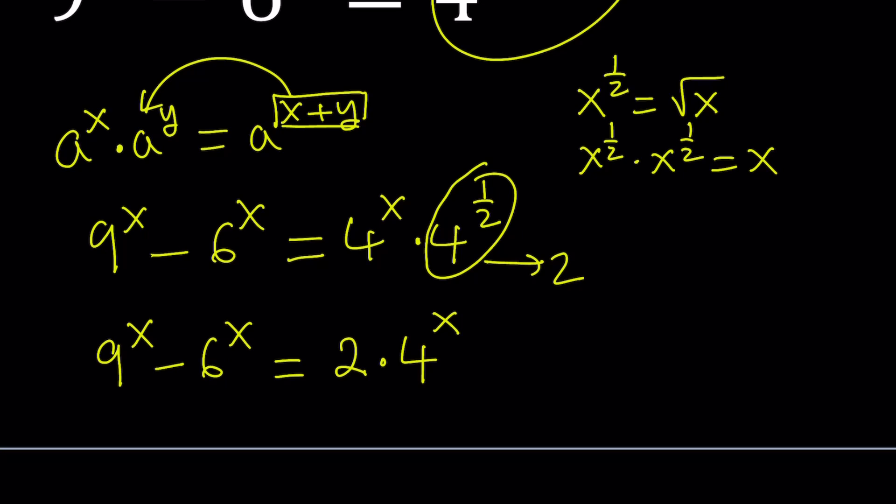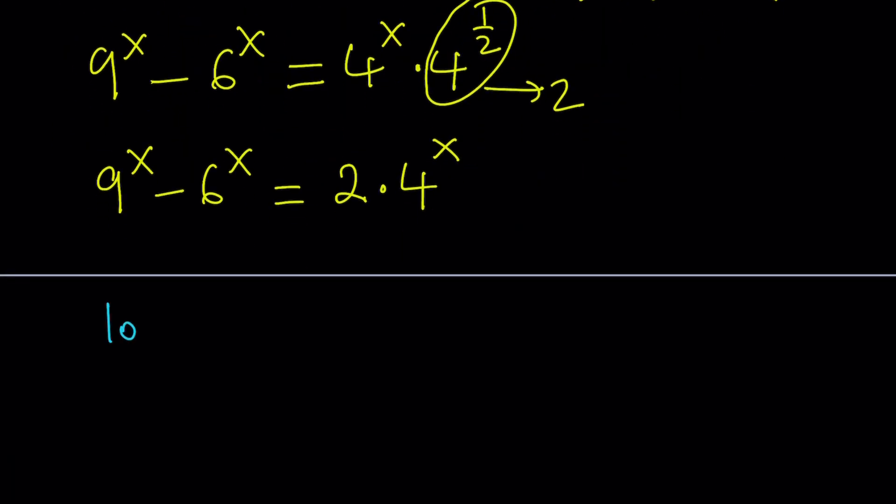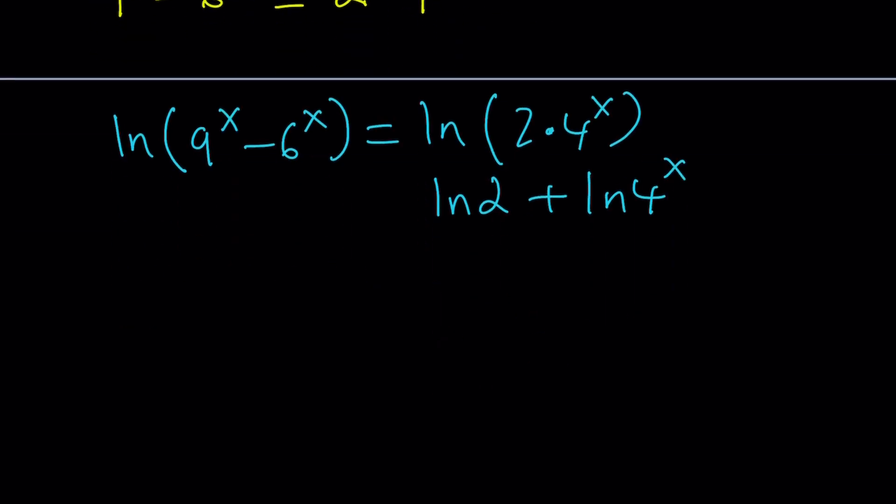We were able to simplify the right hand side a little bit. Now we see three different powers that have the same exponent x. Now a lot of times this question comes up: Can we take the natural log of both sides? The answer is why not? You can always take the natural log of both sides. Now on the right hand side, if you have the log of a product, you can write this as sum of two logs, and the exponent can be moved to the front.